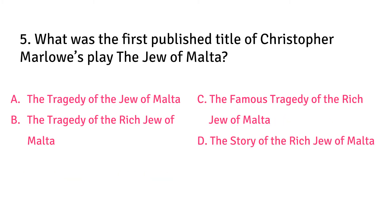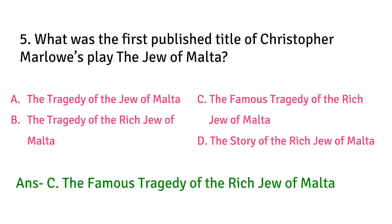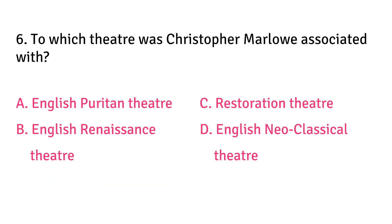What was the first published title of Christopher Marlowe's play The Jew of Malta? The answer is C: The Famous Tragedy of the Rich Jew of Malta.